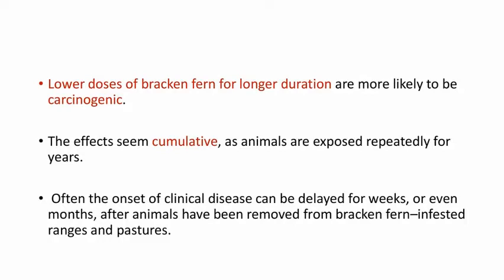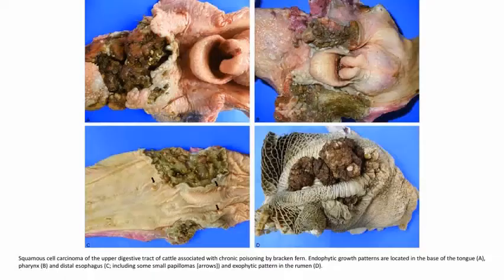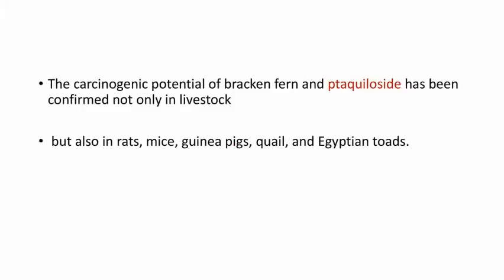Lower doses of Bracken Fern for longer duration are more likely to be carcinogenic. The effects seem cumulative as animals are exposed repeatedly for years. Often, the onset of clinical disease can be delayed for weeks or even months after animals have been removed from Bracken Fern-infested ranges and pastures. These pictures show squamous cell carcinomas in the upper GI tract caused by chronic Bracken Fern poisoning: squamous cell carcinoma at the base of tongue, in the pharynx, in the distal esophagus, and in the rumen.